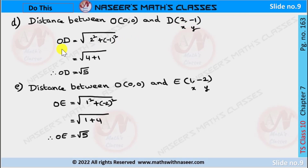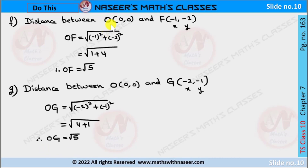The distance OD = √(x² + y²) with x = 2 and y = −1 gives OD = √(2² + (−1)²) = √(4 + 1) = √5. Similarly, OE with x = 1 and y = −2: OE = √(1² + (−2)²) = √(1 + 4) = √5. And OF with x = −1 and y = −2: OF = √((−1)² + (−2)²) = √(1 + 4) = √5.